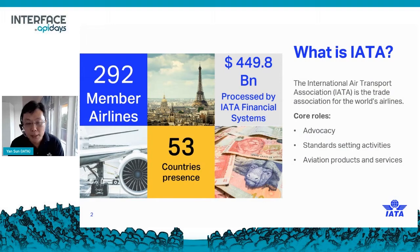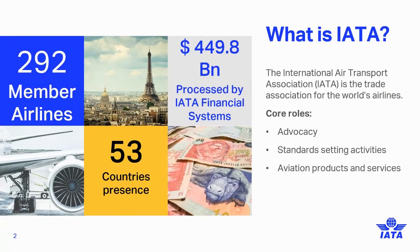So just a quick overview on what is IATA and what we do. IATA is the International Air Transport Association — we are the trade association for the world's airlines, representing 292 airlines globally, with presence in 53 countries worldwide. There are three core roles from IATA to support the industry. First of all, we advocate for the industry benefits worldwide. At present, one focus of the advocacy is the industry recovery from the COVID pandemic. The second role would be standard-setting activities — under industry governance, IATA coordinates with member airlines and strategic partners to develop global standards.